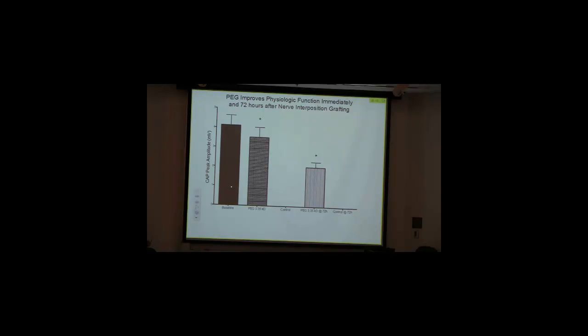You get a certain amplitude extracellular response. You do your double cut, your interposition autograft. You PEG fuse twice. And in fact, you get a remarkable number of axons conducting all the way through the autograft. As opposed to the control, if you don't do anything. And in fact, if you look at how much conduction you get as measured extracellularly, three weeks later, it's still quite substantial.